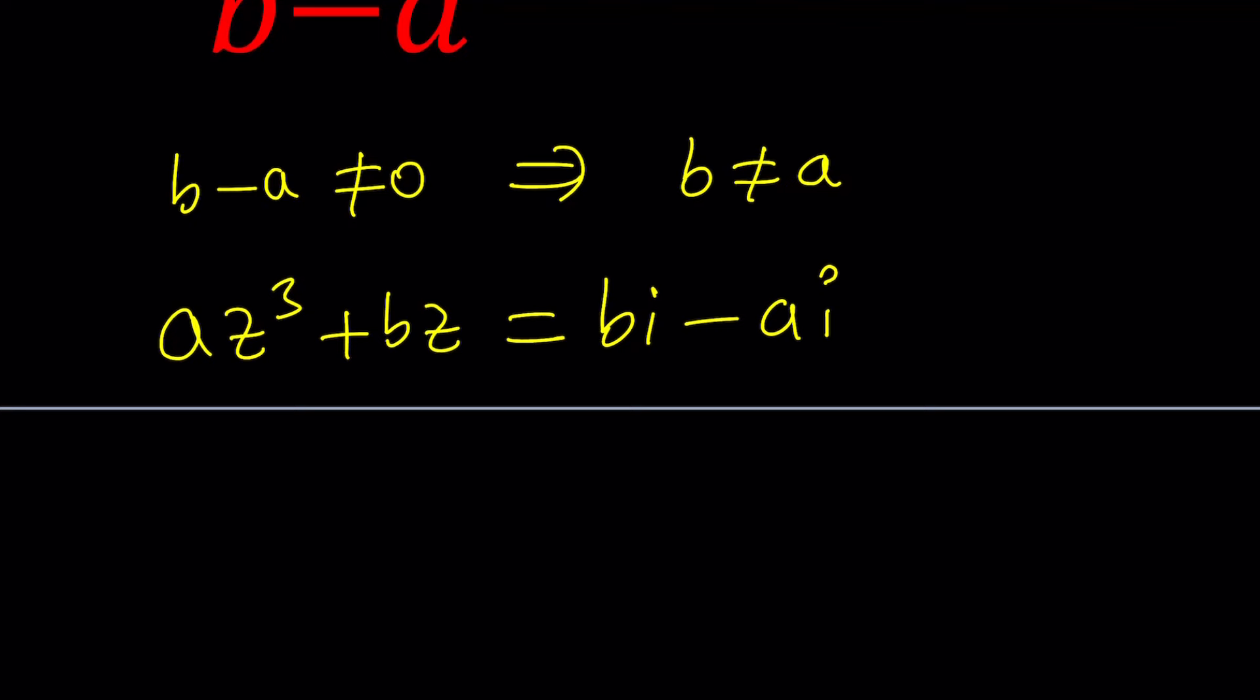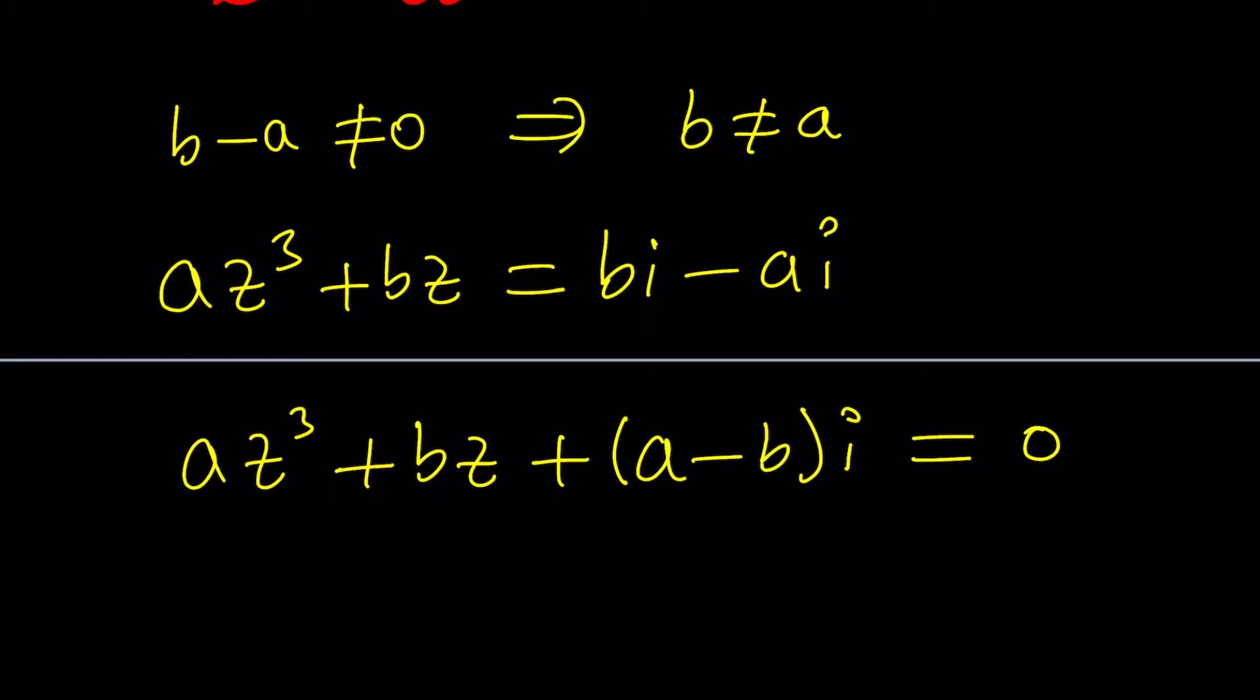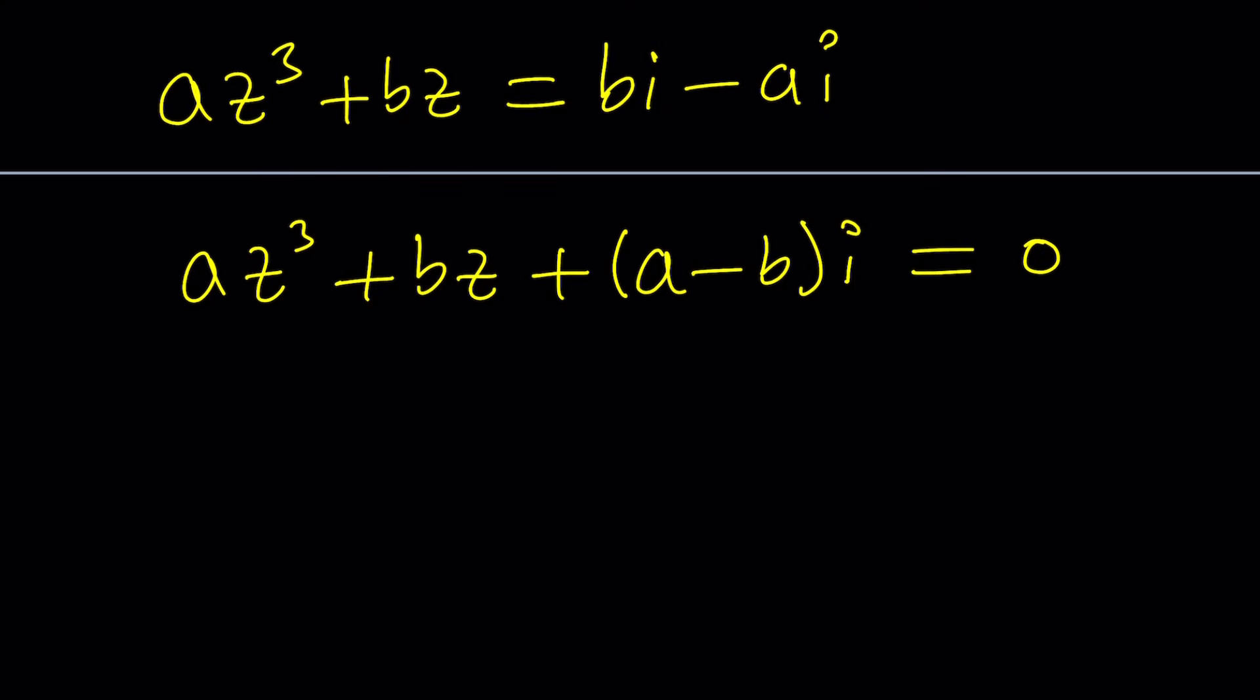So now we want to solve this equation. This is cubic. So I think one of the ways, the first method, is going to be the cubic formula. If you put everything on the same side, this is going to be A minus B multiplied by I. And this is going to be my cubic. And this doesn't have Z squared. So that's a depressed cubic, which is perfect for the cubic formula.